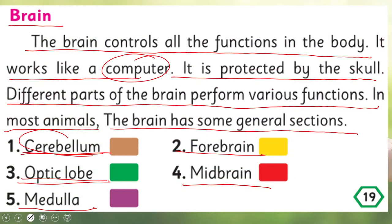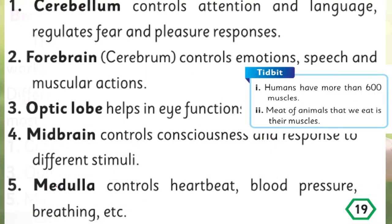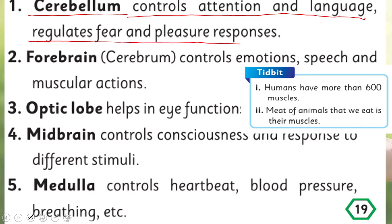Your brain has different parts: cerebellum, forebrain, optic lobe, midbrain, and medulla. The cerebellum controls attention and language, and regulates fear and pleasure responses. The languages you know are stored in the cerebellum, and it helps you in talking. Your feelings and emotions are also attached to this portion.